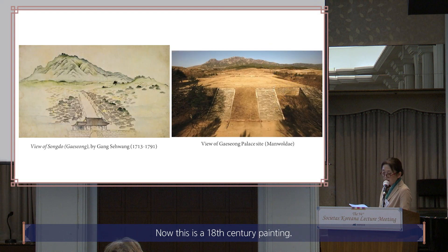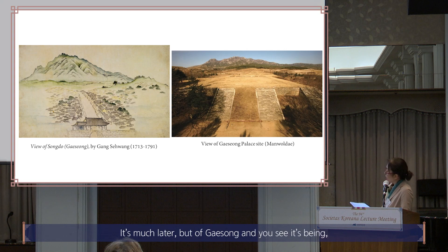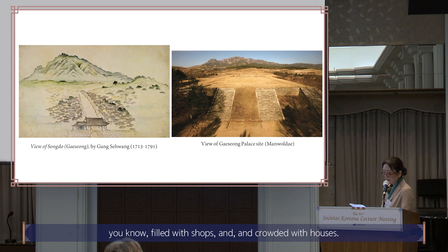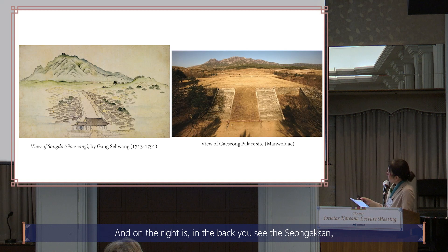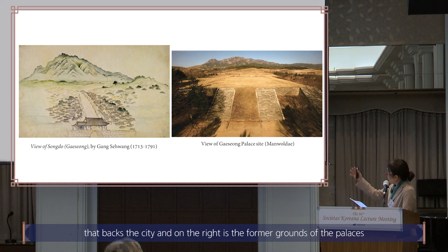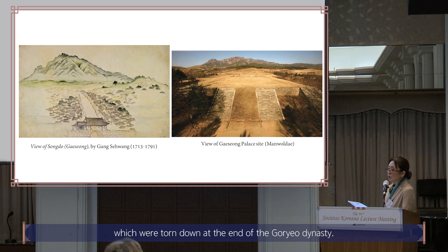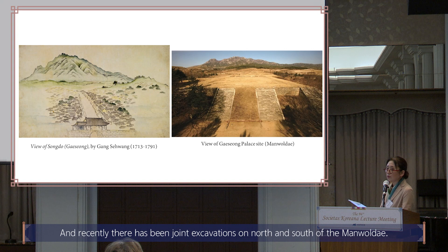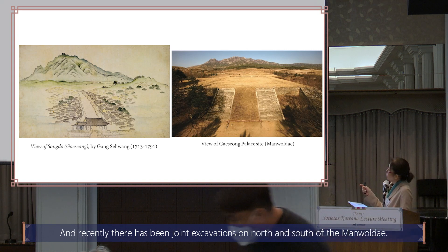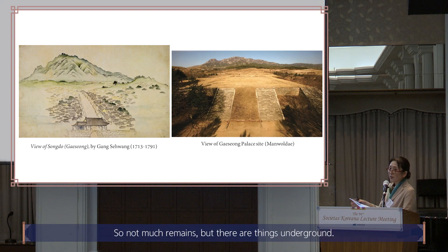This is an 18th-century painting of Kaesong — much later — but you can see it's filled with shops and crowded with houses. In the back you see the Songak-san that backs the city. On the right are the former grounds of the palaces, which were torn down at the end of the Koryo dynasty. Recently there have been joint excavations at the Manolte, and though not much remains above ground, there are things underground. These are the stairs that lead up to the palaces.